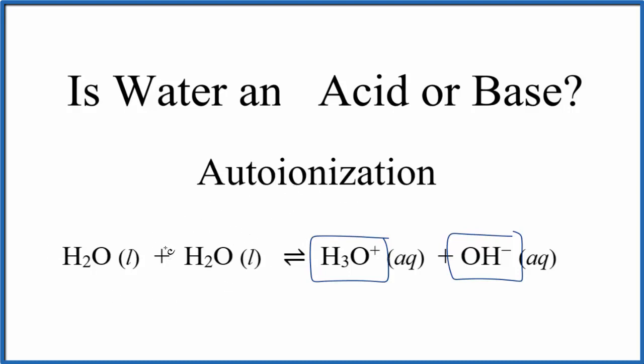Very few molecules in a sample of water will do this, but a few will. Since the pluses and minuses cancel out, we maintain that pH of 7.